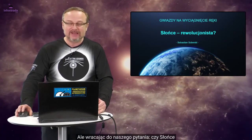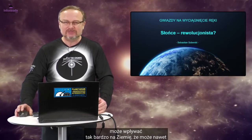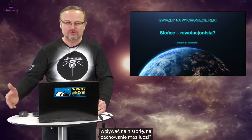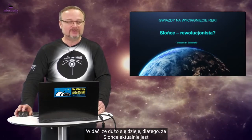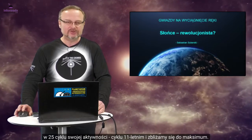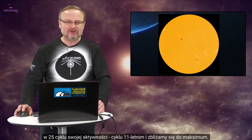Ale wracając do naszego pytania. Czy Słońce może wpływać tak bardzo na Ziemię, że może nawet wpływać na historię, na zachowanie mas ludzi? Widać, że dużo się dzieje, dlatego że Słońce aktualnie jest w 25. cyklu swojej aktywności, cyklu 11-letnim. No i zbliżamy się do maksimum.